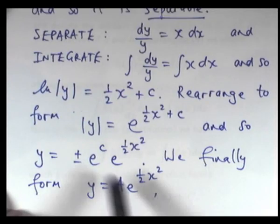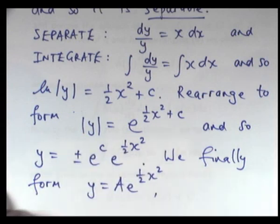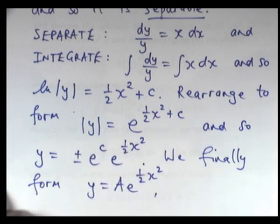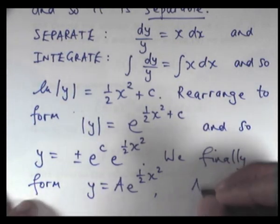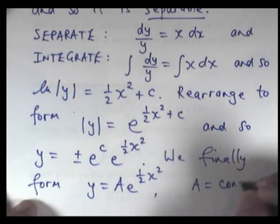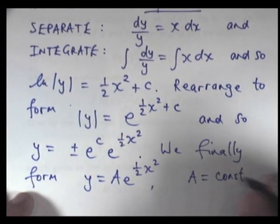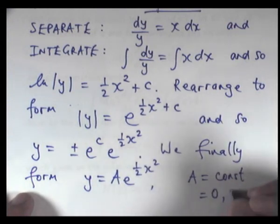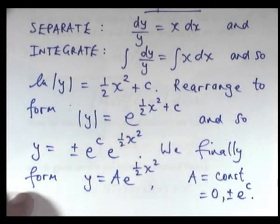Now, this a here, you can think of it as a super constant. This a could be zero or it could be plus or minus e to this integration constant. Okay, this is a nice, simple way of writing the solution that is easy to work with if we need to do things with it. Okay, so, a equals constant. By that, I mean zero or plus or minus e to the c.